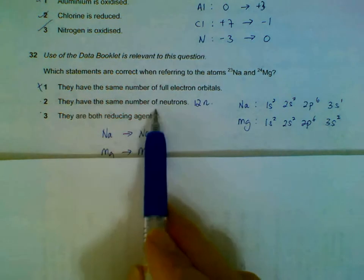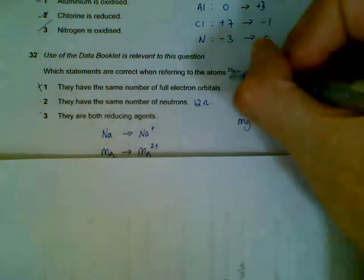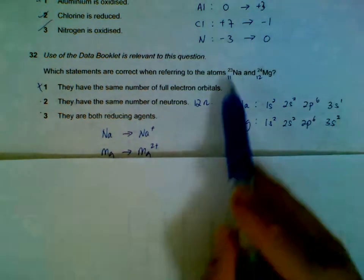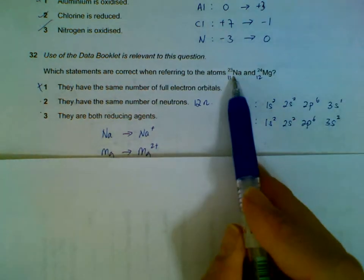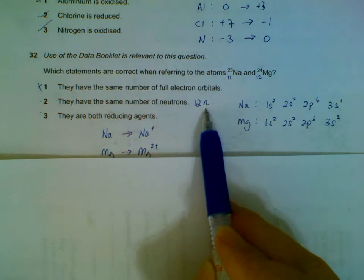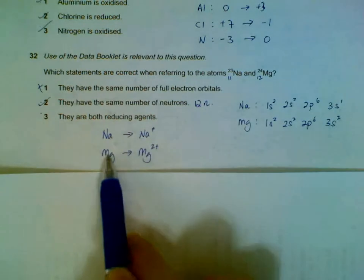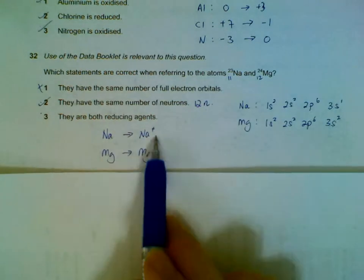Same number of neutrons - sodium has 11, magnesium has 12 protons. So if you take the difference between the nucleon and the protons, we'll end up with 12 neutrons. So two is correct. Both sodium and magnesium are metals. They will want to be oxidized, and when that happens they are acting as reducing agents.